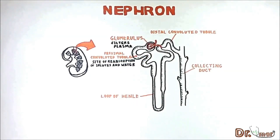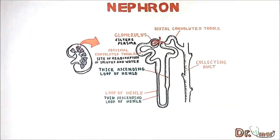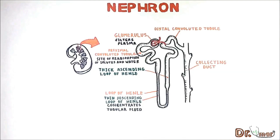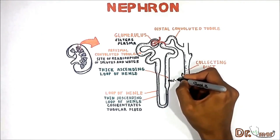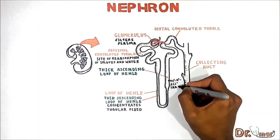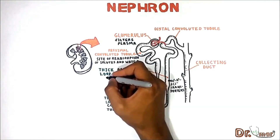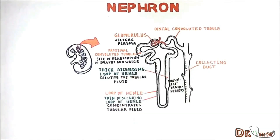The loop of Henle is composed of the thin descending loop of Henle and the thick ascending loop of Henle. The thin descending loop of Henle is impermeable to solutes but permeable to water, thus it concentrates tubular fluid as water diffuses out. The thick ascending loop of Henle is impermeable to water but has sodium-potassium-chloride transporters that reabsorb most solutes, dilute the tubular fluid, and set up and maintain the interstitial concentration gradient.